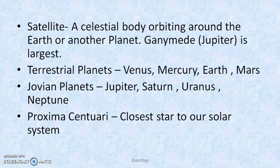Planets are divided into two groups: terrestrial planets and Jovian planets. Terrestrial planets are the inner 4 planets — Mercury, Venus, Earth and Mars. They have Earth-like rocky surfaces. Jovian planets, also called Jupiter-like planets, are the outer planets — Jupiter, Saturn, Uranus and Neptune. The closest star to our solar system is Proxima Centauri.